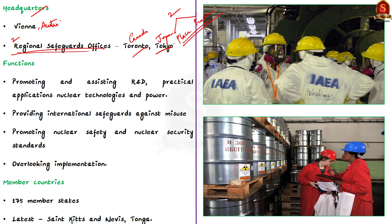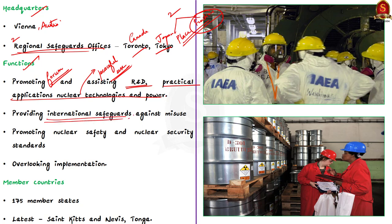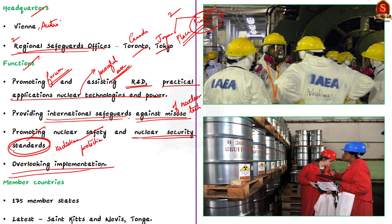The IAEA serves as a forum for promoting and assisting research, development and practical applications of peaceful uses of nuclear technology and nuclear power worldwide. It provides international safeguards against the misuse of nuclear technology and nuclear materials. It promotes nuclear safety and nuclear security standards including radiation protection, and it monitors the implementation of those safety and security standards.